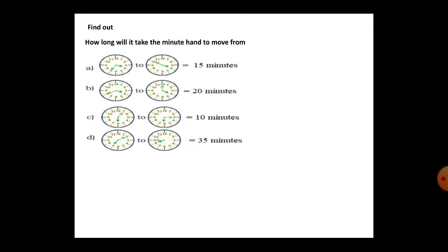Find out how long it will take the minute hand to move from one position to another. For example, the minute hand is at 7 and moves to 10. From 7 to 8 it takes 5 minutes, from 8 to 9 another 5 minutes, and from 9 to 10 another 5 minutes. So 15 minutes passed in total.